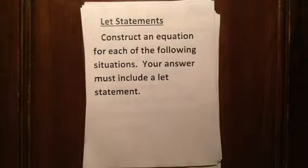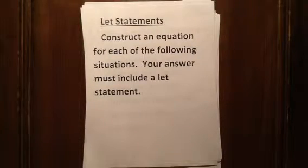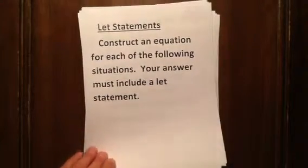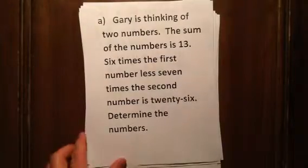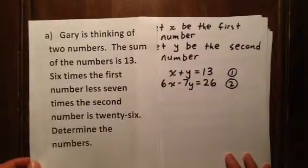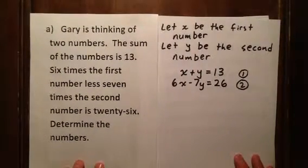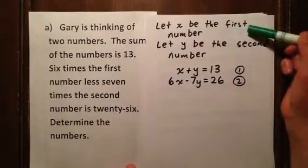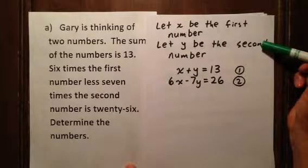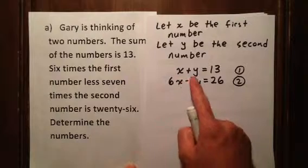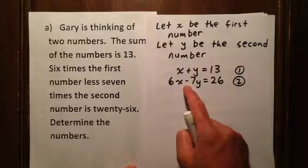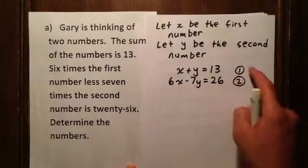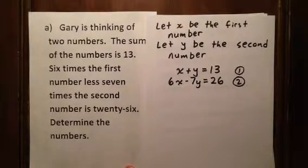Now we move on to let statements. Let statements tell the reader what you are defining the variables to represent. We will construct equations for each situation. For example: Gary is thinking of two numbers. The sum of the numbers is 13, and 6 times the first number less 7 times the second number is 26. We let x represent the first number and y represent the second number, giving us two equations and two variables — a system of equations.